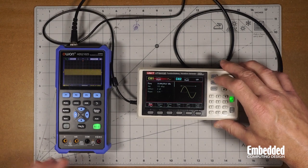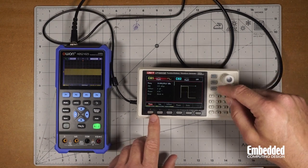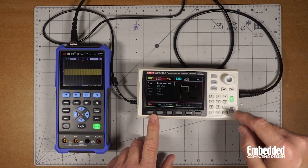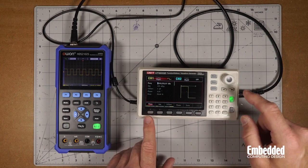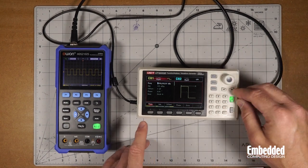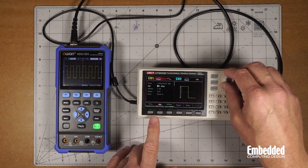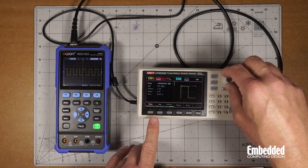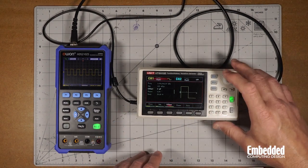If we want to go into different waves, we can do a square wave and change the frequency. We'll do one kilohertz. We can also do other things like adjusting the amplitude by pressing that.